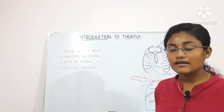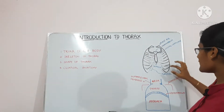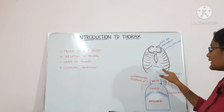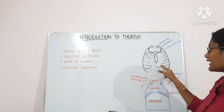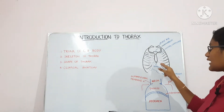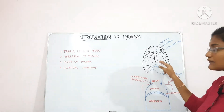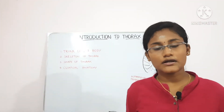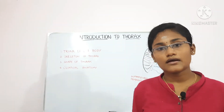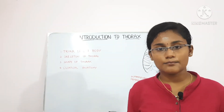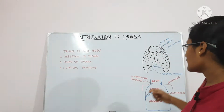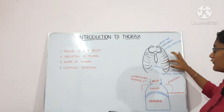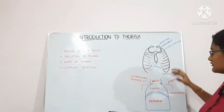The next three pairs of ribs — that is the 8th, 9th, and 10th — attach themselves to the higher cartilages of the upper ribs. They attach posteriorly to the vertebral column and are called vertebrochondral ribs. The 7th, 8th, 9th, and 10th ribs together form the costal margin.